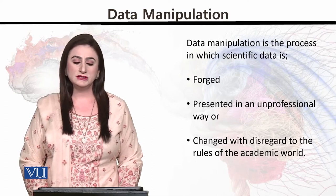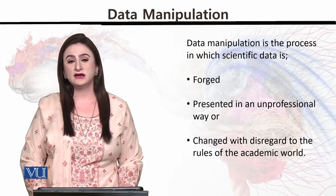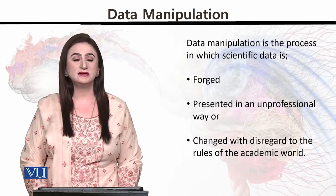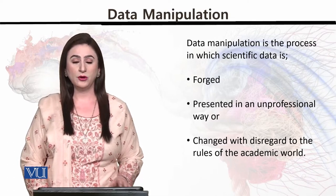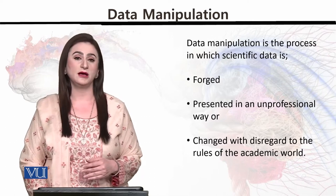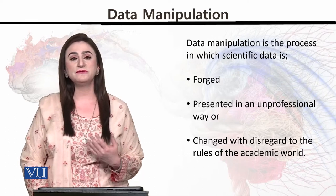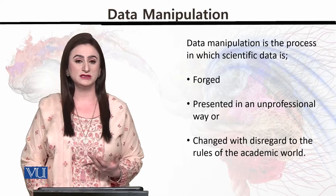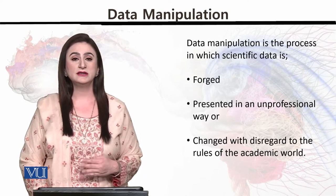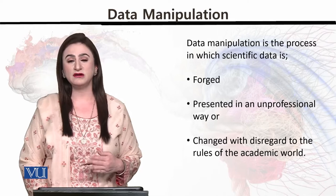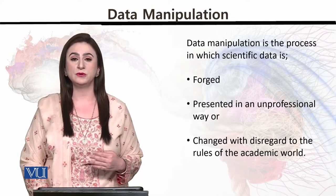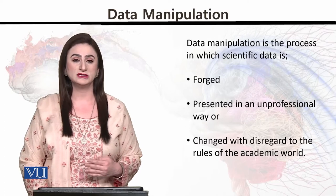Data manipulation is a process in which scientific data is either forged, presented in an unprofessional way, or changed with disregard to the rules of the academic world. There could be different variations of how data could be manipulated, but it is very much evident from these definitions that data is not being manipulated in a positive manner.